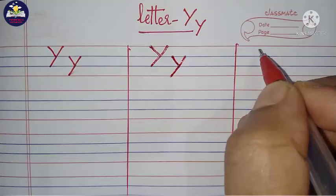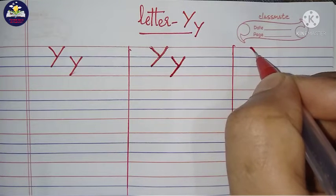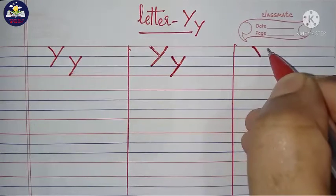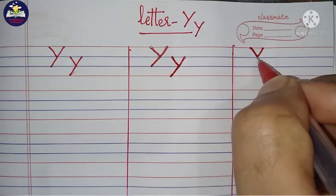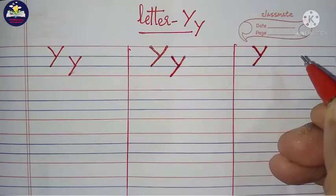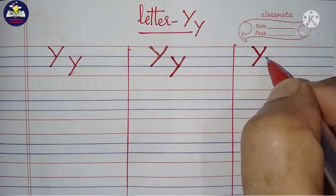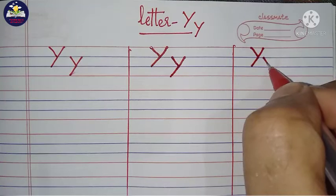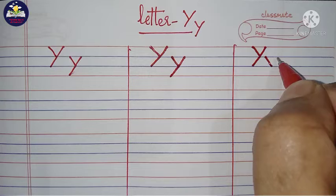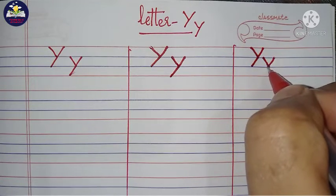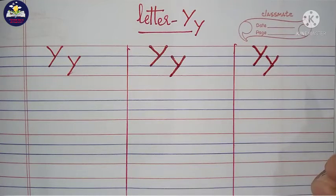Again, I am showing how to write capital letter Y. Start from the top line, draw a backwards slant line till the second line, then a forward slant line till the third line. This is capital letter Y. For small letter Y, start from the second line, draw a backwards slant line till the third line, then a forward slant line till the fourth line. This is small letter Y.